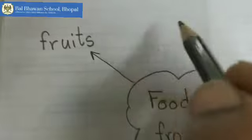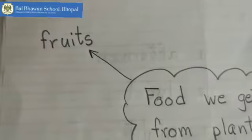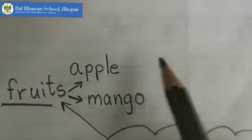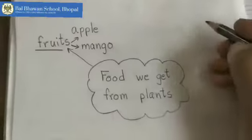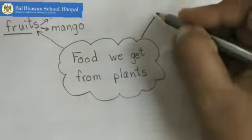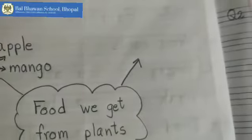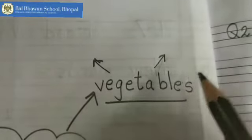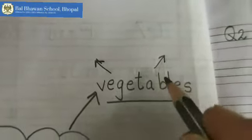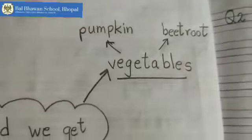Fruits — F, R, U, I, T, S — fruits. You can write the names of any two fruits of your choice. I am writing apple and mango. Now on this side you are going to make an arrow and write here: vegetables. You can write the names of any two vegetables of your choice.